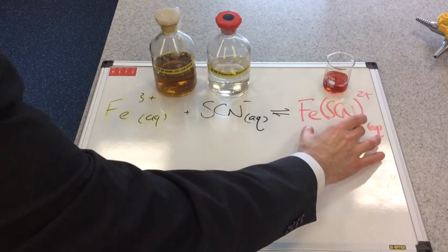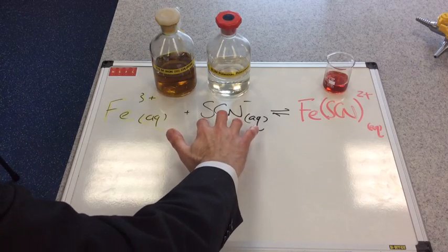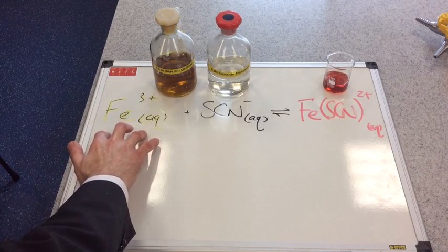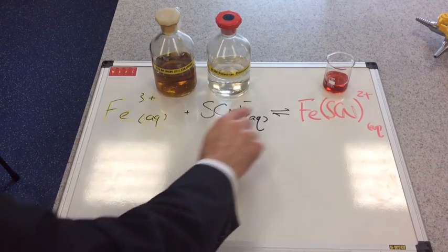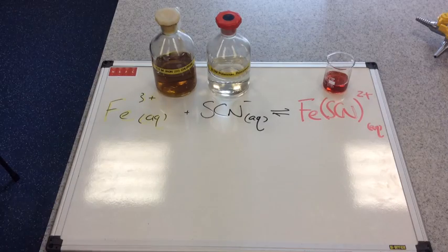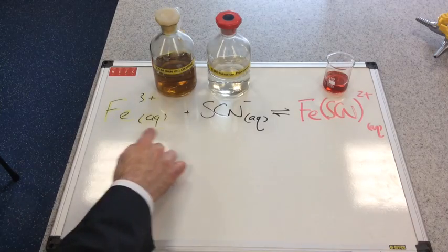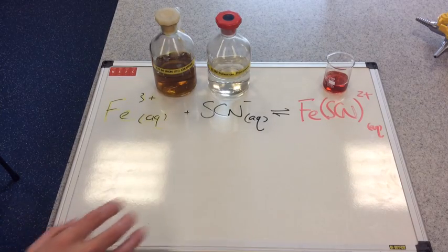We don't just have the red one, we have the thiocyanate ion and the Fe3 plus ion as well. And because equilibrium has been established, the concentrations of these three ions are constant. They're not changing.